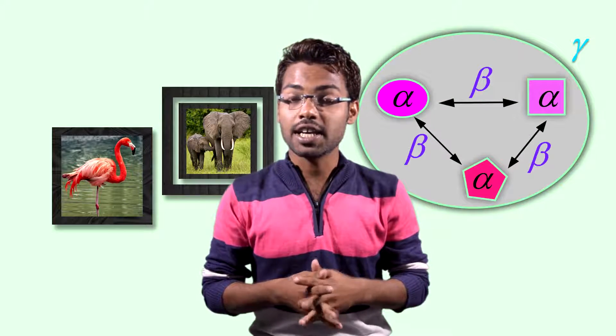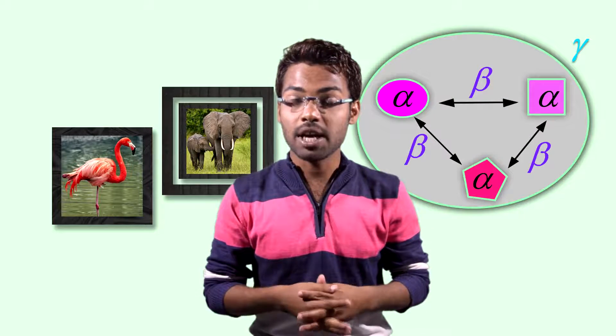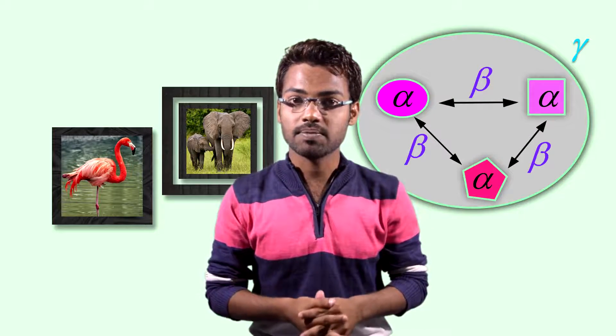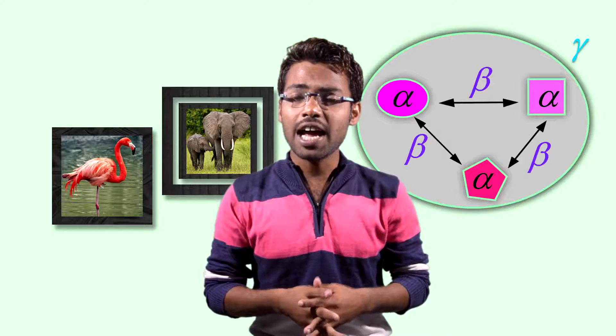The biggest unit of biodiversity is gamma diversity. In a big geographical area, the diversity between many ecosystems of that geographical area is called gamma diversity. Actually, alpha and beta diversity together are called gamma diversity.